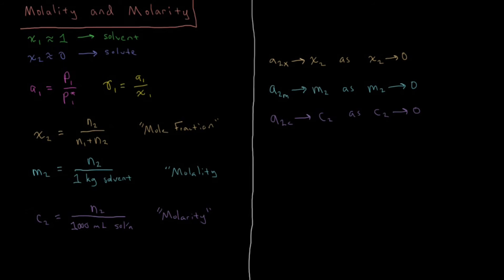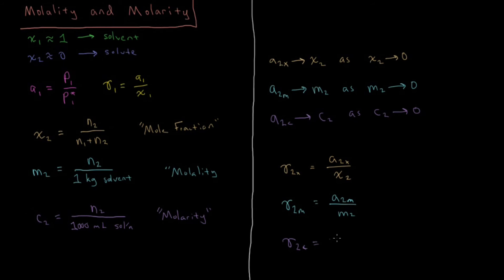For each of these we can define activity coefficients. The activity coefficient with respect to mole fraction is the mole-fraction activity divided by the mole fraction. The activity coefficient for molality is the molality-based activity A₂^m divided by molality. Finally, the activity coefficient for concentration is the concentration-based activity divided by the concentration of component 2.